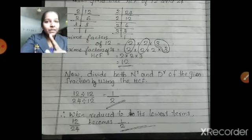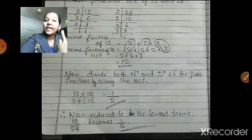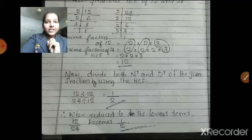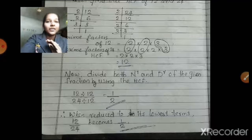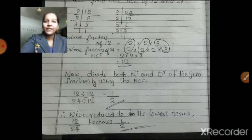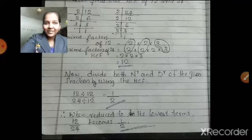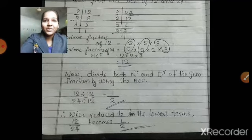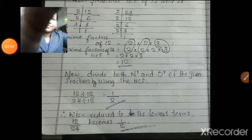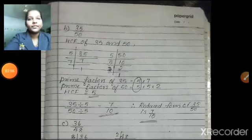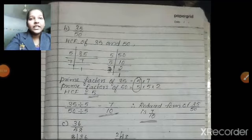So, the first step is you find out the HCF of the numerator and denominator. Then, by using that HCF, you divide both numerator and denominator. You will get the reduced form of the given fraction. Next question also, you can answer like this. The next question is 35 by 50.